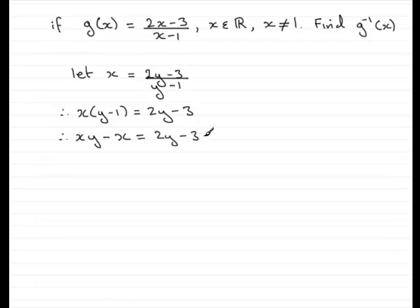Now I'm going to bring the terms containing y to the same side and remove this minus x. So I will subtract 2y from both sides and add x to both sides. What we get now is xy minus 2y equals x minus 3.